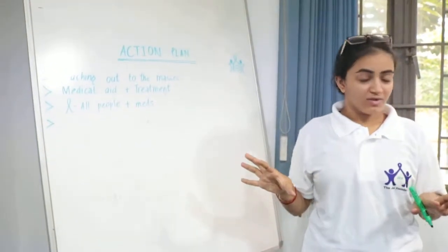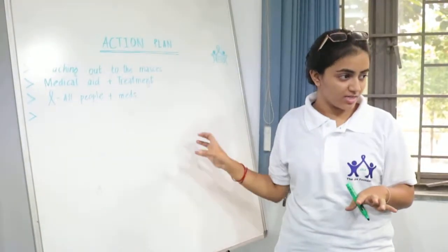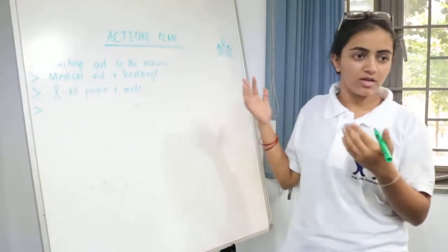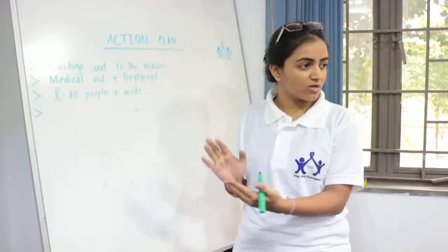In the action plan, what we can do is, apart from what we have mentioned in the functions and mandates, we can talk about things which kind of put our organization apart from what other organizations are already existing.